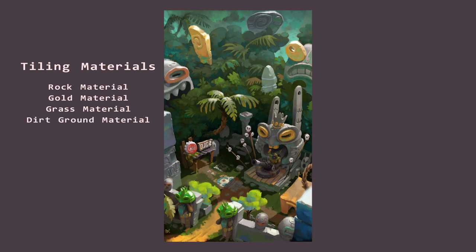Now I'm going to try and see if there's anything I could add to a trim sheet. A trim sheet is a texture atlas that contains a few variations of repeating patterns that can be used on different assets throughout your scene. Some examples of patterns that could be used in a trim sheet from Mahmood's concept here could be the hieroglyphics on this column or even these slabs of stone teeth that are used on the statue in the back.